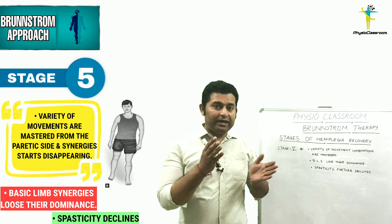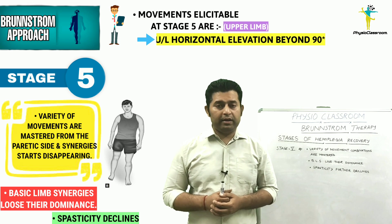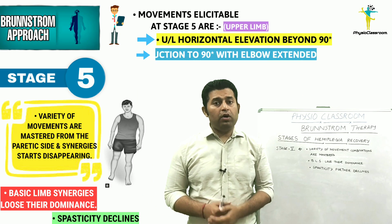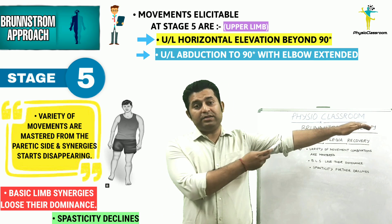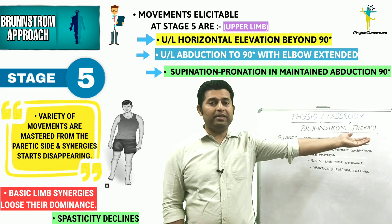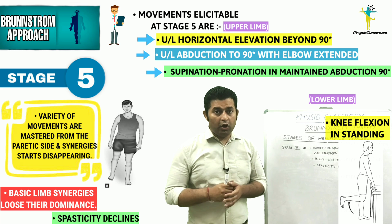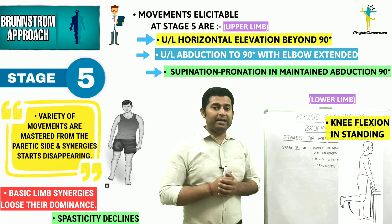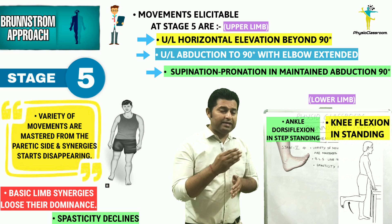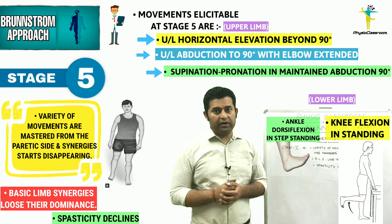The key upper limb movements for Stage 5 include: the ability to take the paralytic upper limb into horizontal elevation beyond 90 degrees up to 180 degrees, the ability to abduct the paralytic upper limb to 90 degrees while keeping the elbow extended, and the ability to pronate and supinate while keeping the arm in the abducted position. For the lower limb, if the patient can perform isolated knee flexion on the paralytic side while keeping the hip extended during standing, or can perform isolated ankle dorsiflexion in a step-standing position, the patient is classified into Stage 5.